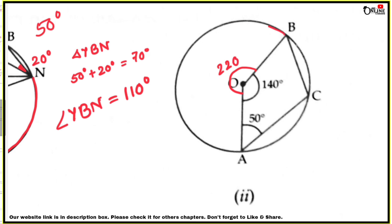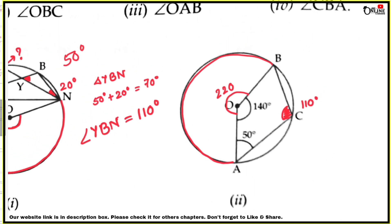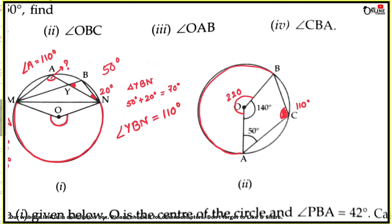For the arc AB, the central angle is 220 degrees. The inscribed angle ACB at the remaining part equals half of 220, which equals 110 degrees.